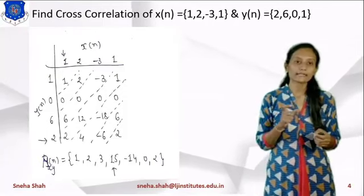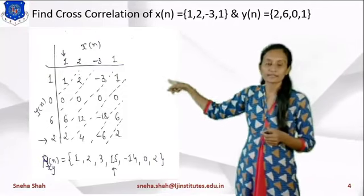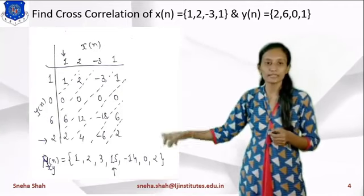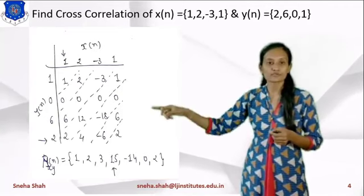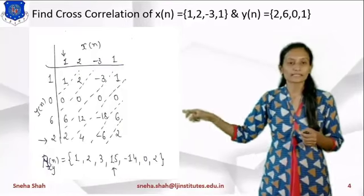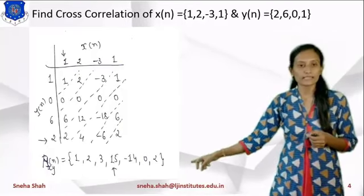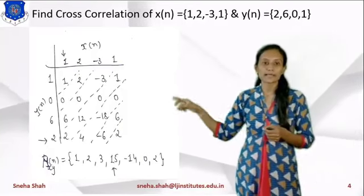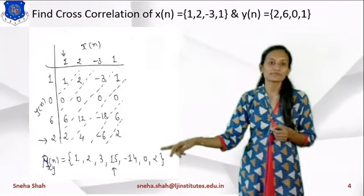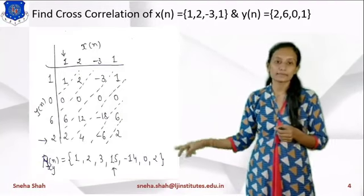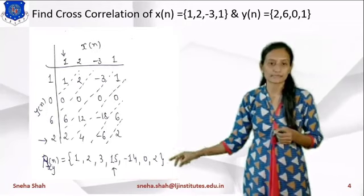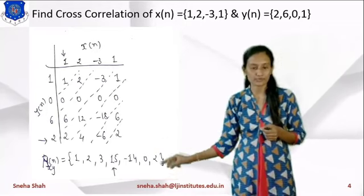The arrow is placed in front of the 2. Now 1 multiplies with all the terms, giving {1, -3, 1}. 0 multiplies with all four terms, so all terms will be 0. Likewise I find all the other terms. After drawing the slant lines and adding terms within each: first term = 1, next = 2+0 = 2, next = 6-3+0 = 3, next = 2+12+1 = 15, next = 4-18 = -14, next = -6+6 = 0, last term = 3.